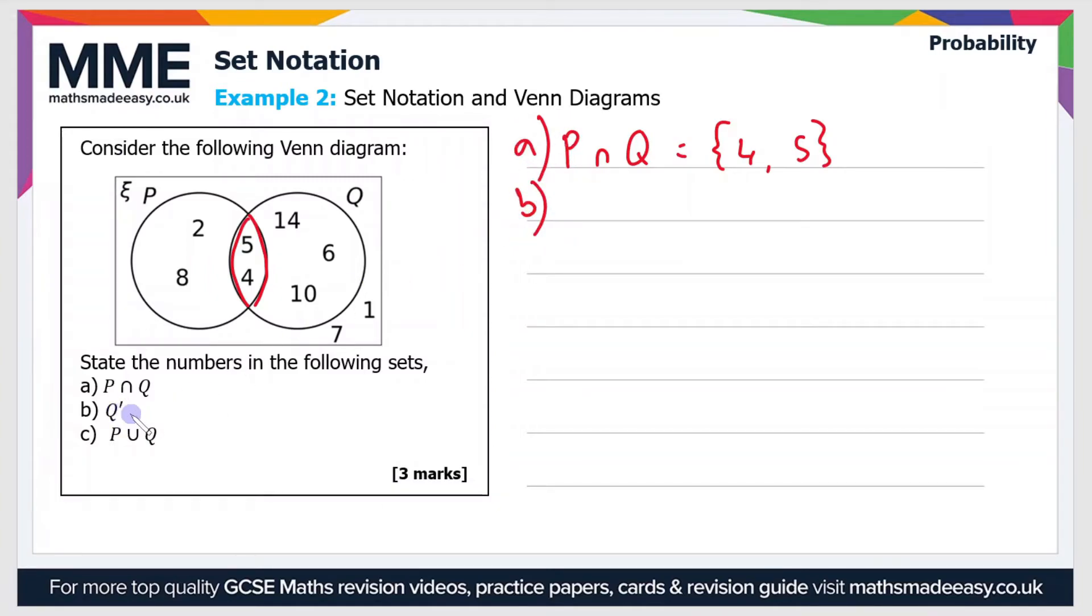And that's Q'. So Q' is anything that's not in Q. So that's anything outside—I'm going to draw a blue circle now—so anything that's outside of the blue circle. So let's write Q' in set notation. So that is the numbers {1, 2, 7, 8}.